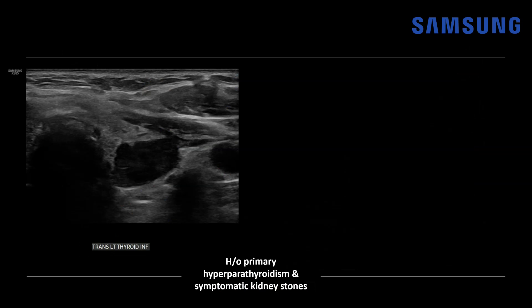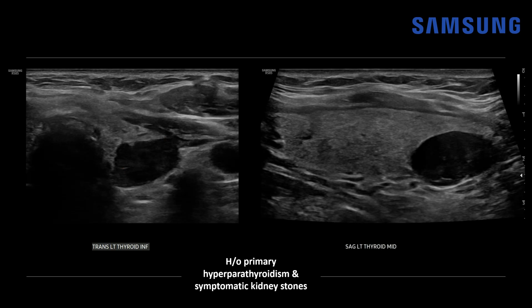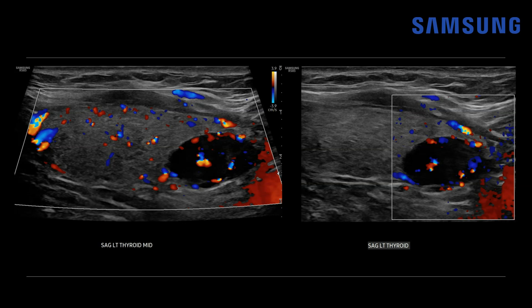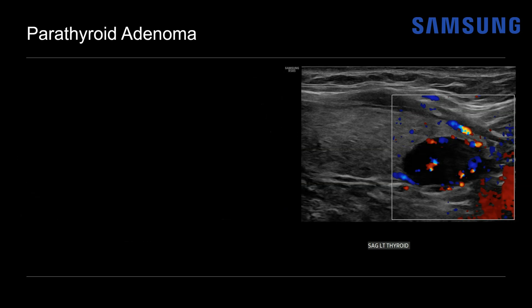Let's look at a case. This was a male in his 60s presenting with a history of primary hyperparathyroidism and symptomatic kidney stones. Here we're looking at a focused view of the left thyroid lobe — there's the trachea, here's the left thyroid, and then we have this ovoid hypoechoic solid-appearing nodule. You might initially think this could be a thyroid nodule. When we turn sagittally, we can see that it is oriented in long axis with the gland longitudinally, and there's a thin echogenic line separating it from the gland. It measures about two centimeters. When we add color Doppler imaging, we see increased flow — it is a bit hyperemic relative to the adjacent gland.